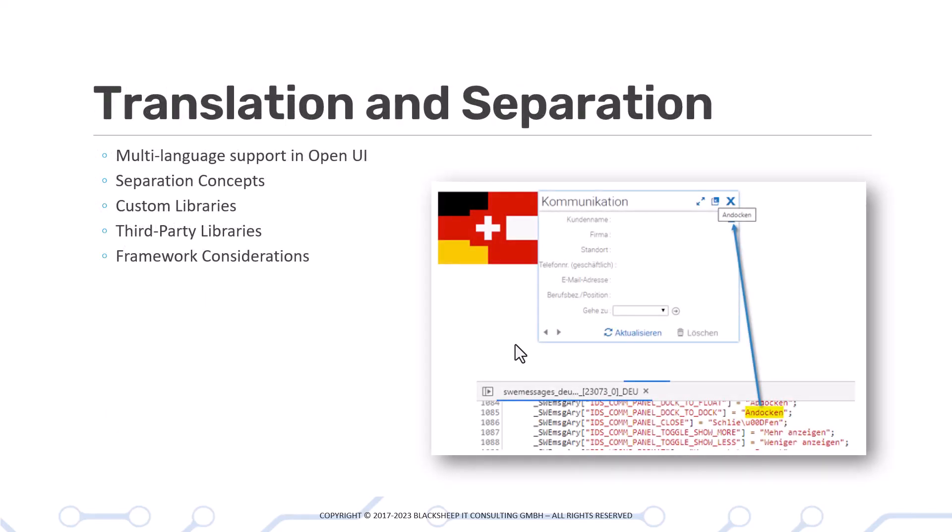The Translation and Separation module kicks off the professional course with a deep-dive introduction to multi-language support in Siebel OpenUI, how to add translations professionally, and it also covers the concept of separation or segregation of code, introducing you to concepts to include custom system or third-party libraries or even advanced JavaScript frameworks in your customizations.